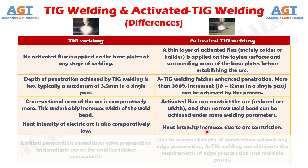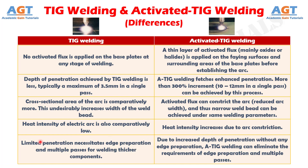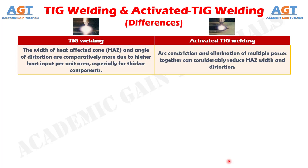Number 5: in TIG welding, limited penetration necessitates edge preparation and multiple passes for welding thicker components, whereas due to increased depth of penetration without any edge preparation, activated TIG welding can eliminate the requirements of edge preparation and multiple passes.